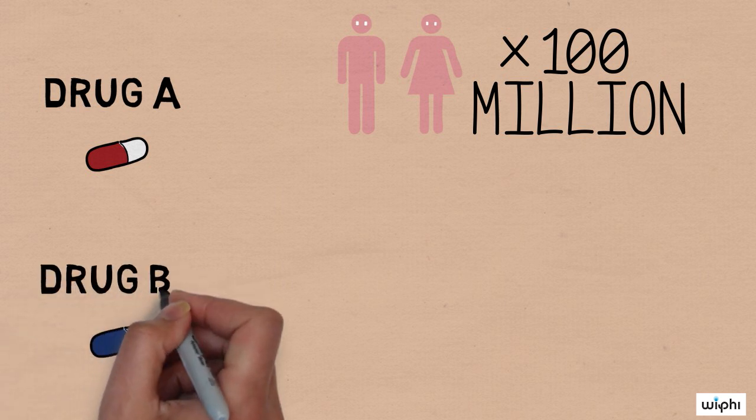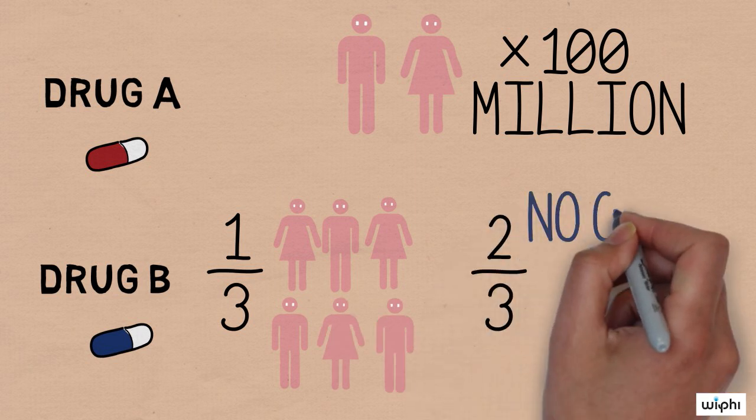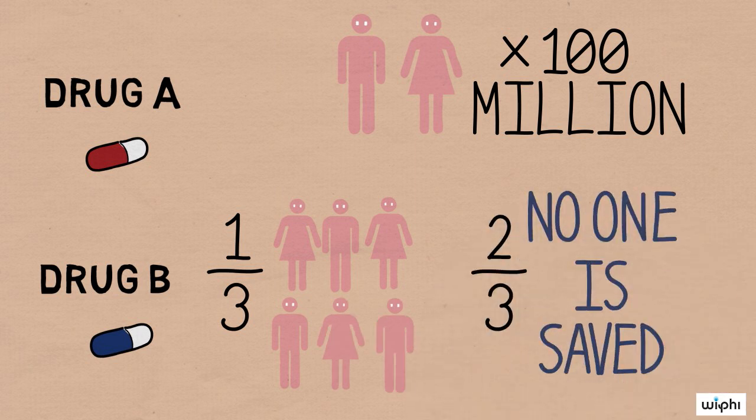The second option is drug B, which has a one-third chance of saving all 600 million people, but a two-thirds chance that no one infected will be saved. Which drug do you pick?